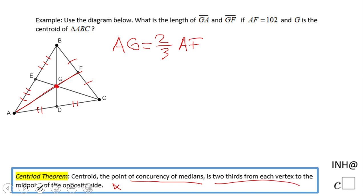So basically this is just plug it in. AG equals two-thirds times 102, and how much is that? It goes into 102 how many times? 34 times, and 2 times 34 is 68. So AG or GA is 68.